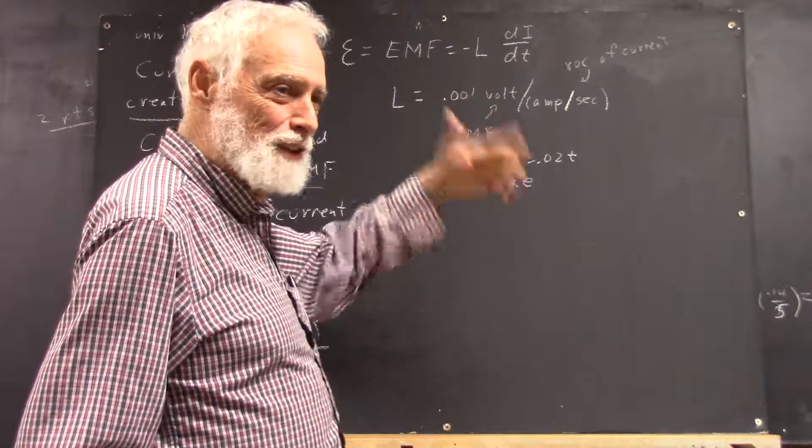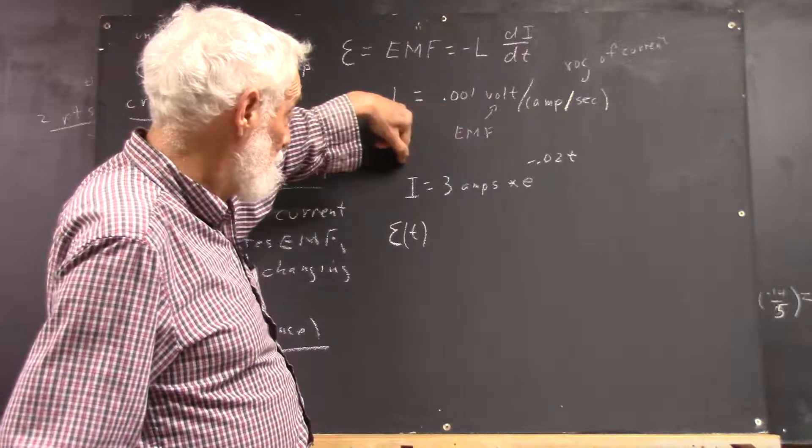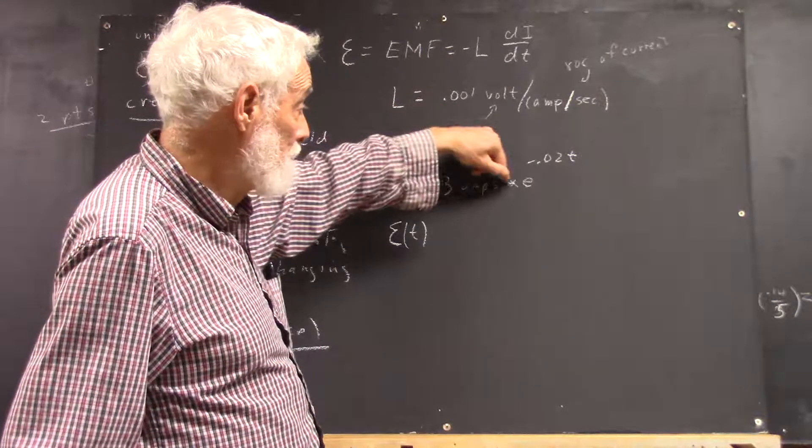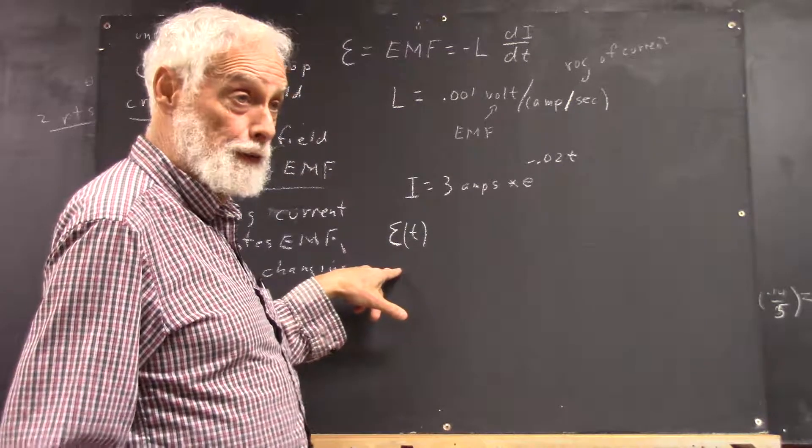Well, aside the digression. Now we're going to have a current. The function is 3 amps times e to the negative 0.02 t. So what's the EMF? It's a function of t.